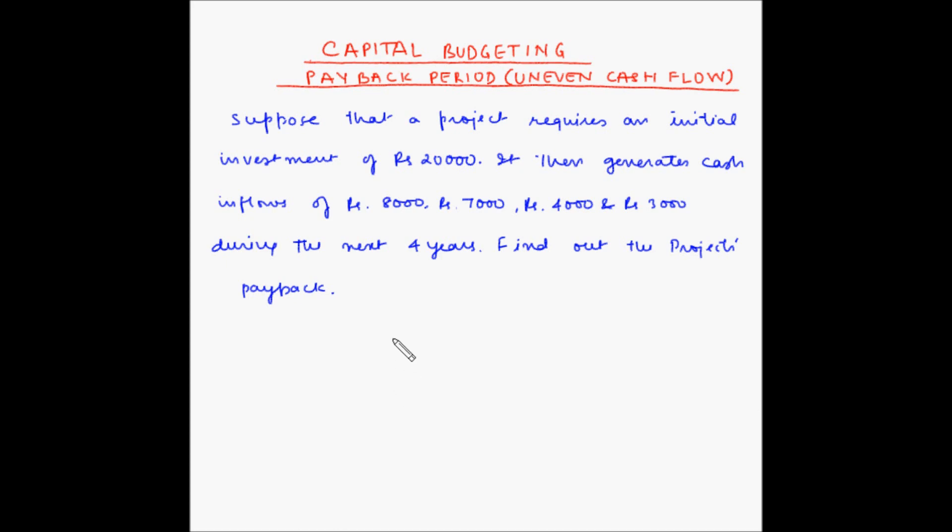Let us first draw a timescale for the cash inflows and outflows. We have four years in consideration: zero, one, two, three and four. The initial outlay is 20,000 rupees and then the cash inflows are 8,000, 7,000, 4,000 and 3,000 rupees.